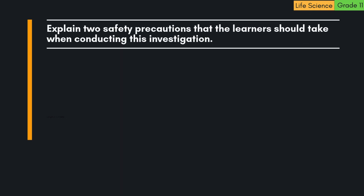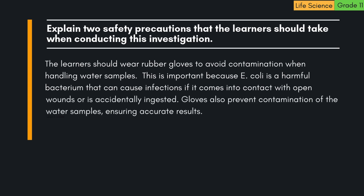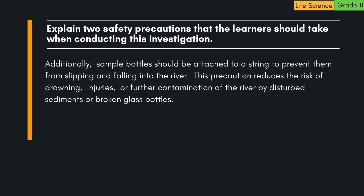Question: Explain two safety precautions that the learners should take when conducting this investigation. 1. The learners should wear rubber gloves to avoid contamination when handling water samples. E. coli is a harmful bacterium that can cause infections if it contacts open wounds or is accidentally ingested. Gloves also prevent contamination of the samples, ensuring accurate results. 2. Sample bottles should be attached to a string to prevent them from slipping and falling into the river, reducing the risk of drowning, injuries, or further contamination of the river by disturbed sediments or broken glass.